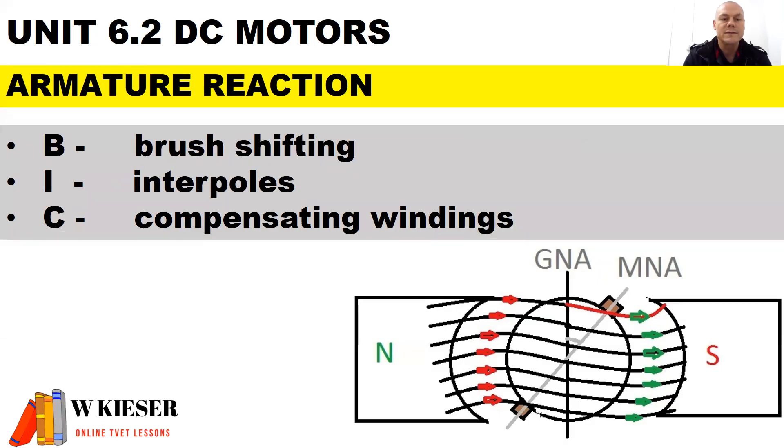Interpoles are smaller poles found in between the main poles and compensating windings are slotted inside the pole shoes.